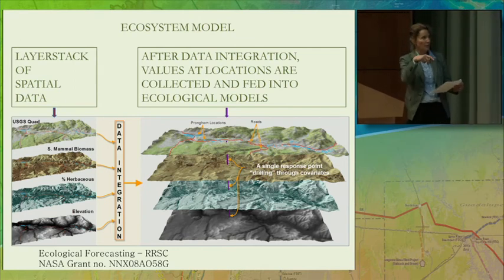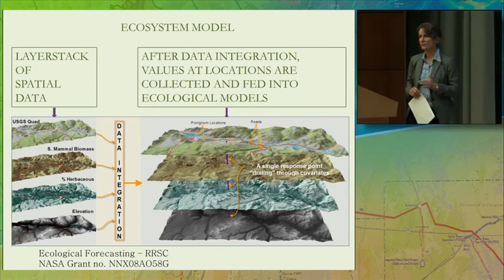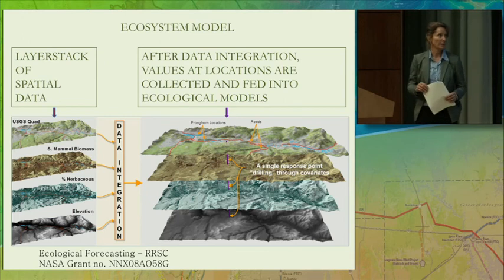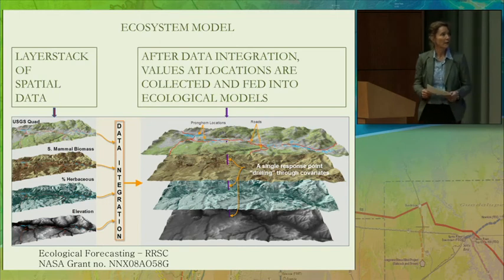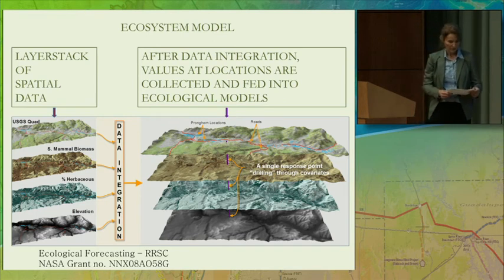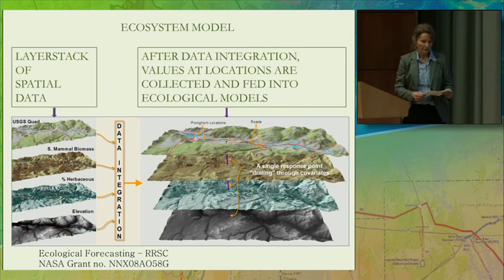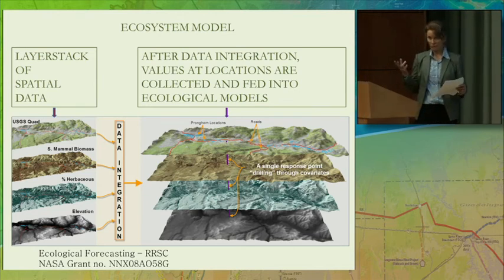Moving across the image, there's a little box called data integration. For those of you who live in the GIS world, that box can also be called blood, sweat, tears, and teeth gnashing — a lot happens in there, so about 90% of the work in assembling these models occurs in that component. Then we move across to the right-hand side of the model, which is the layer stack array. We can see the same data layers connected by a punch-through — that purple rod — moving through all the data layers. The intersection of this punch-through with each of the data layers yields a value from the point of intersection, and these are subsequently fed into tabular arrays and spreadsheets for the follow-through into the modeling component of the workflow.